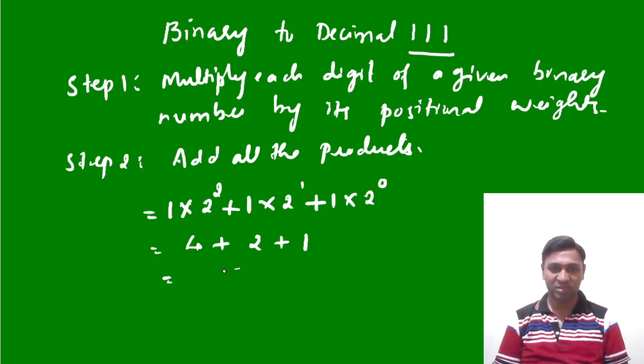4 + 2 + 1, that is seven. Here I'll write seven to the base ten.